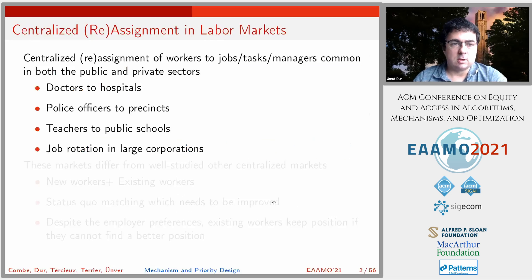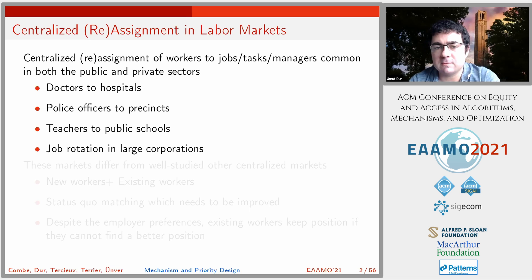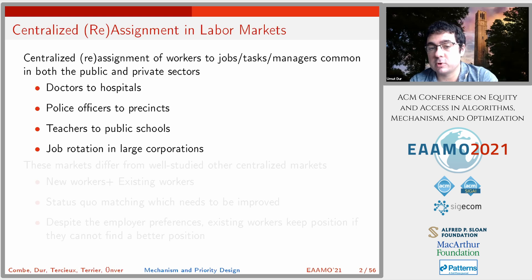In this paper we are looking at two-sided labor markets. The key difference from other labor markets is that there is a centralized reassignment and assignment of workers, which is common in both public and private sectors. Examples include doctors assigned to hospitals, police officers assigned to stations, teachers assigned to public schools, and job rotation in large corporations.